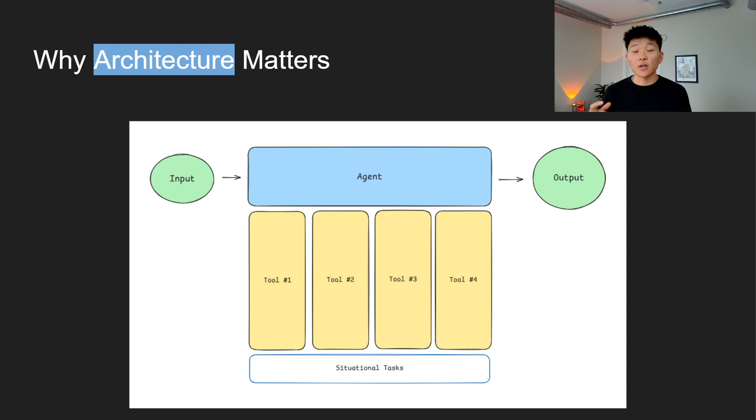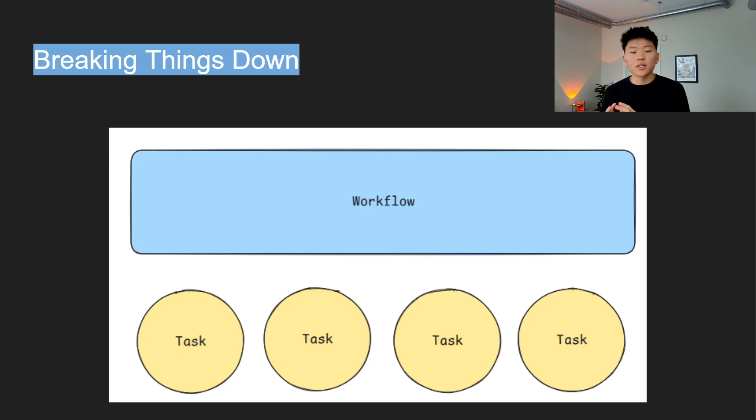So thinking through these scenarios will help you decide what tools the agent should have access to and which ones should be baked into the logic of the workflow that are going to happen every time. For example, if you want every single conversation to be stored in some sort of database, you wouldn't want to give the agent a tool that can do that. If it happens every time, you want to bake it into the logic of the output or following the output.